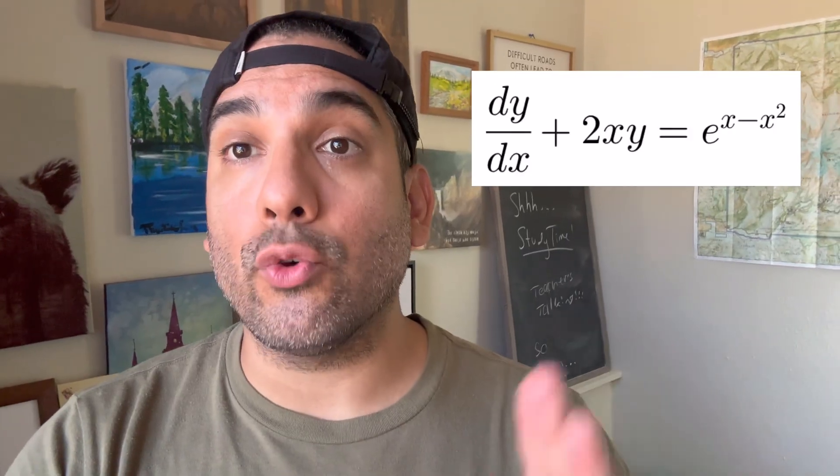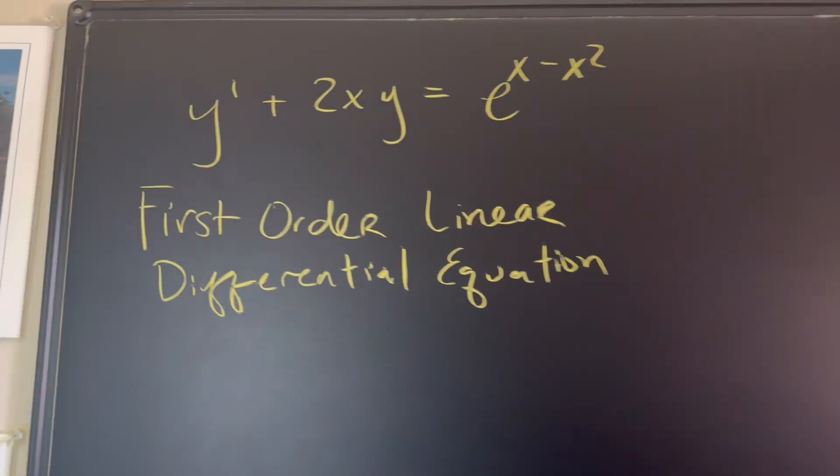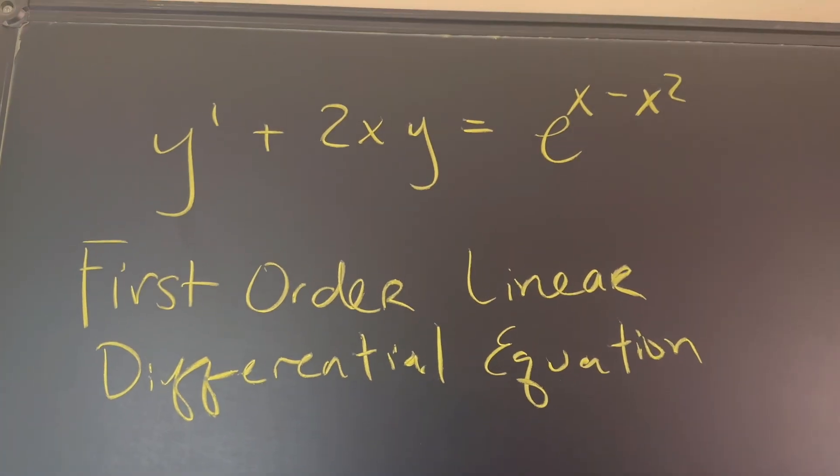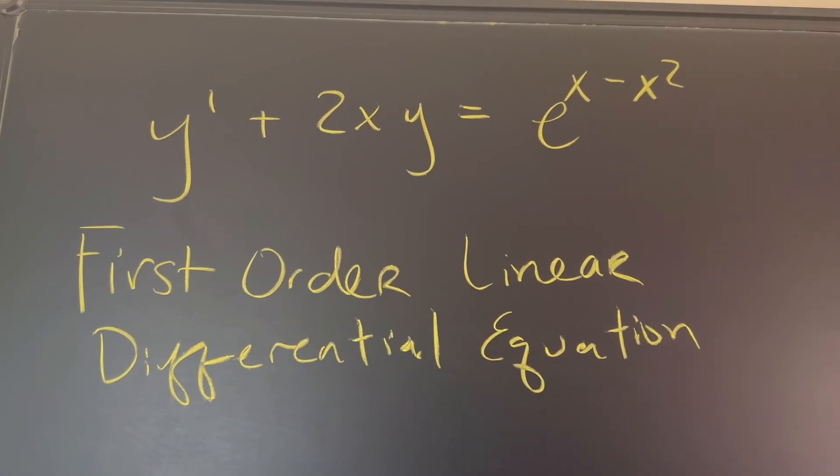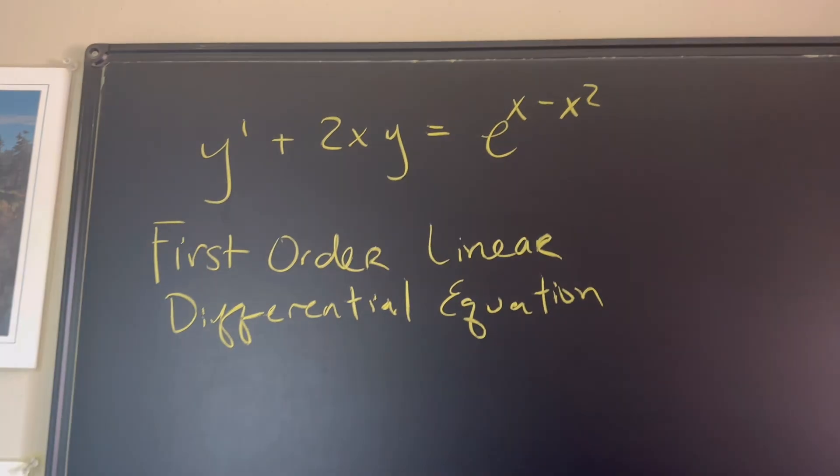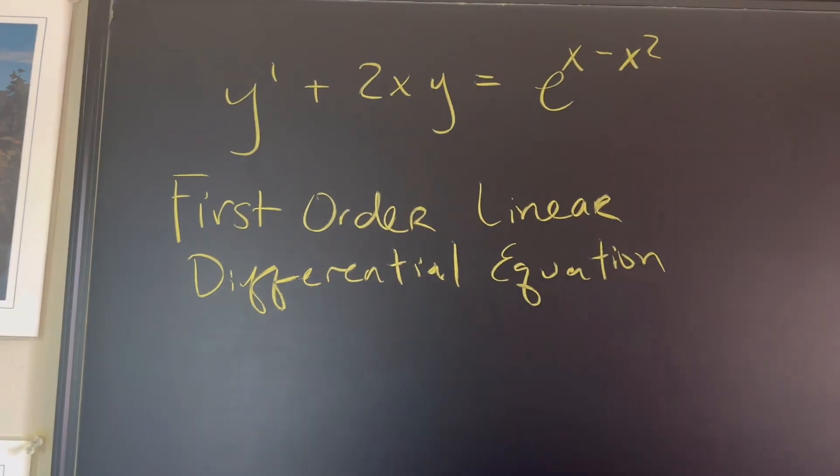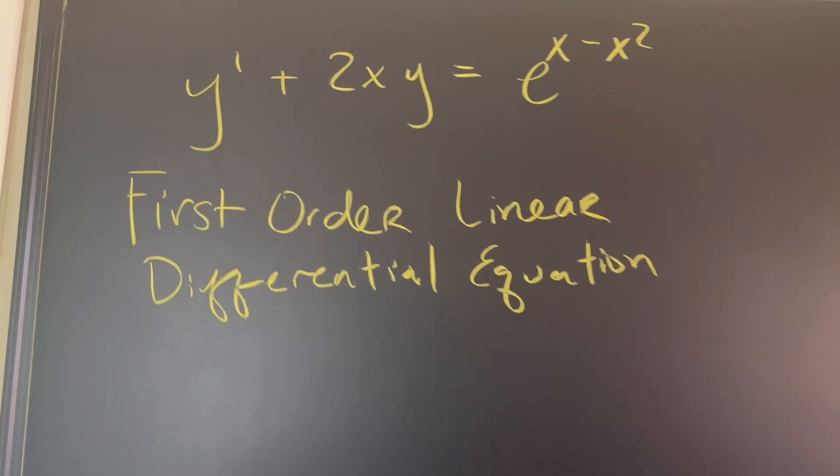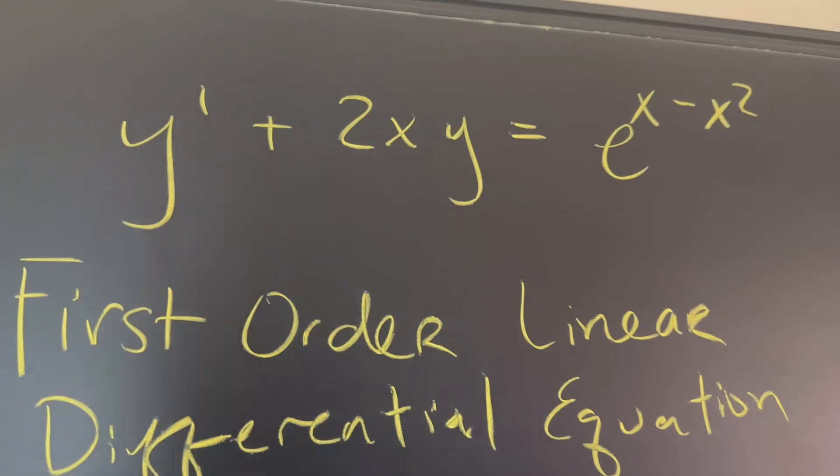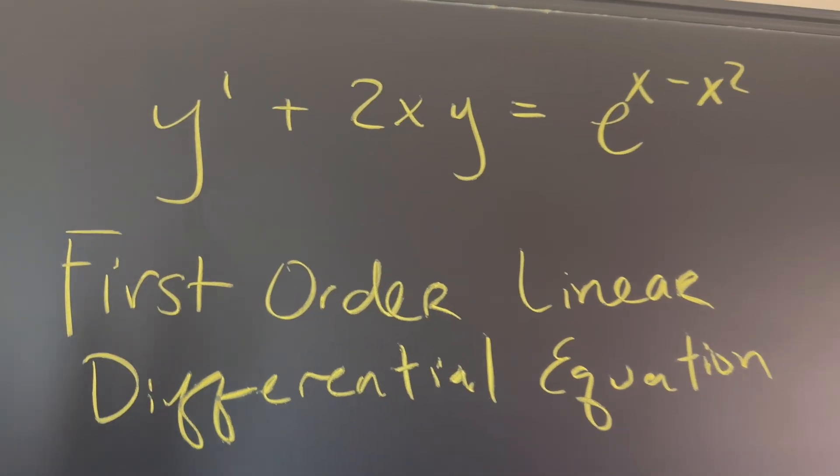Solving this type of first-order linear differential equation is going to be really fun. So let's talk about what we have here. We have y' plus 2x times y equals e to the power of x minus x squared. Why is it a first-order differential equation? Because we only have the first derivative, not the second or third derivative.